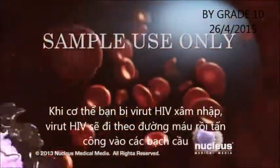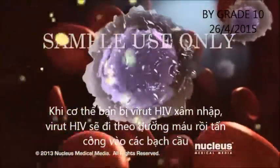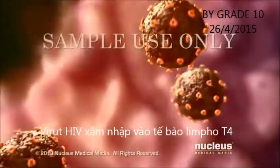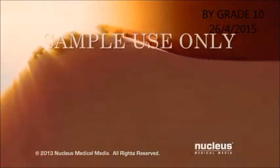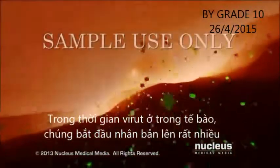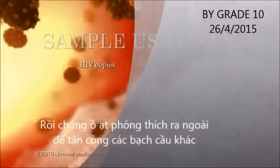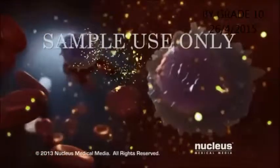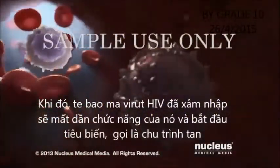If you have HIV, it travels through your blood and other body fluids to infect and kill certain white blood cells. The virus enters helper T cells, which are the primary target. Once inside, the virus makes many copies of itself. As these virus particles are made, they leave the damaged helper T cell to infect other cells.